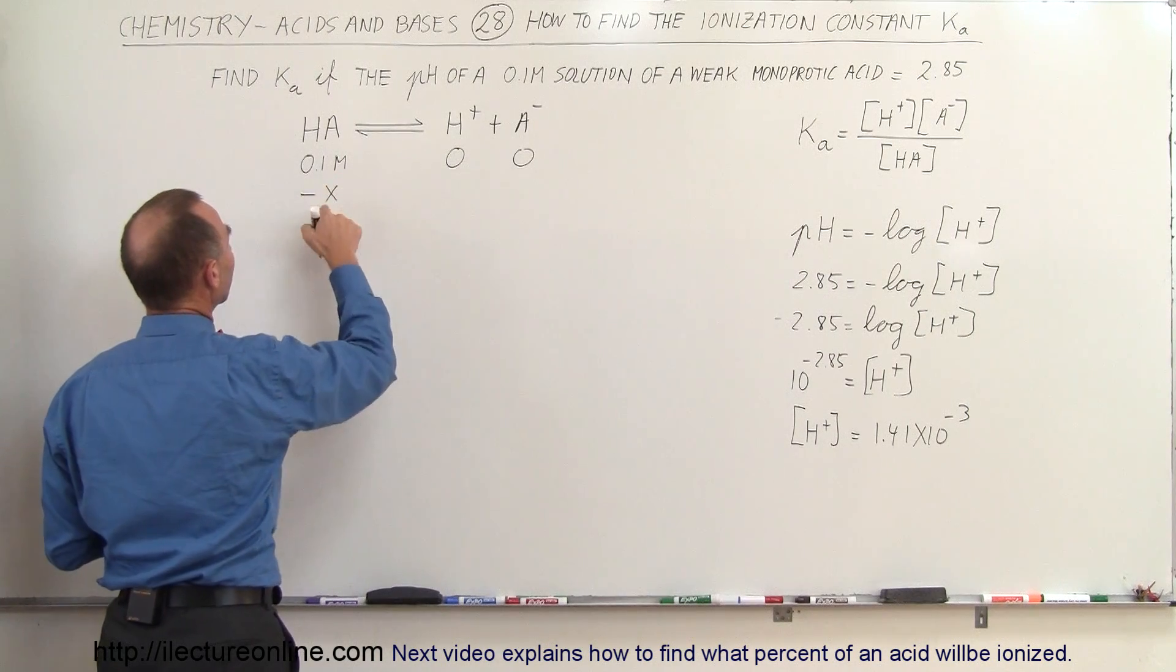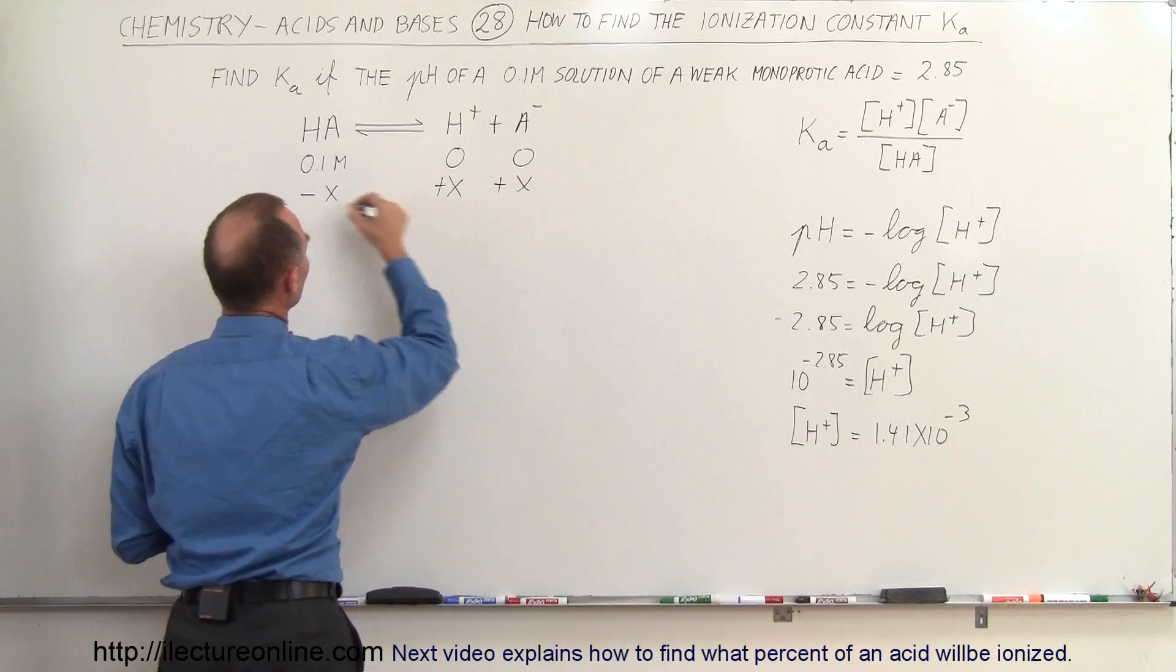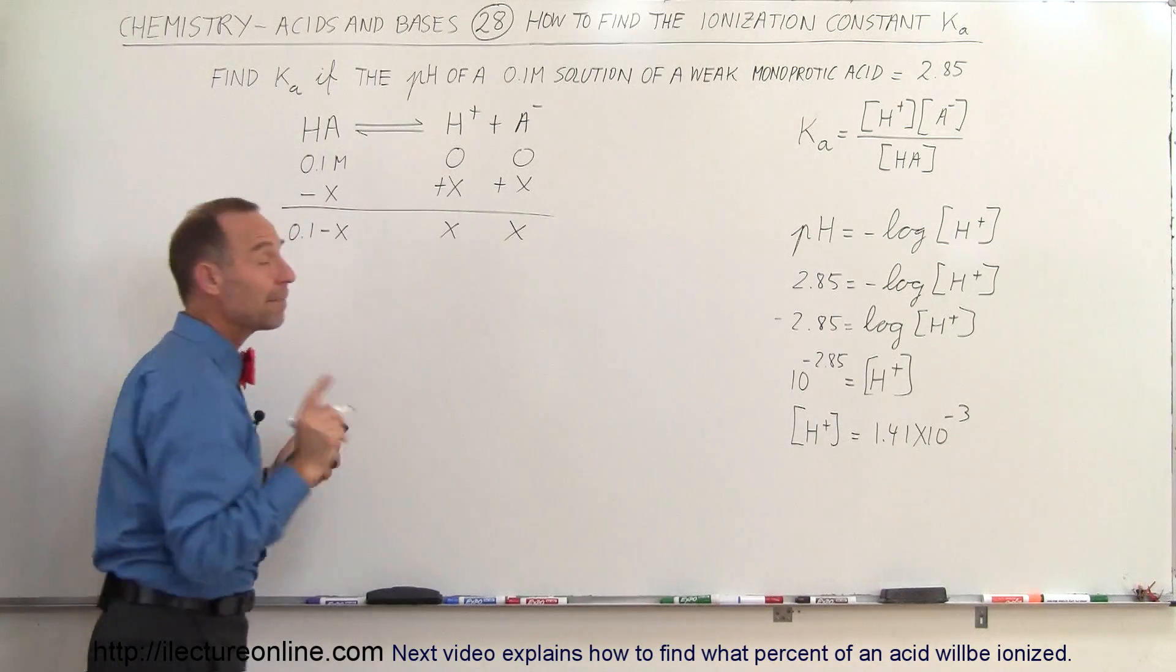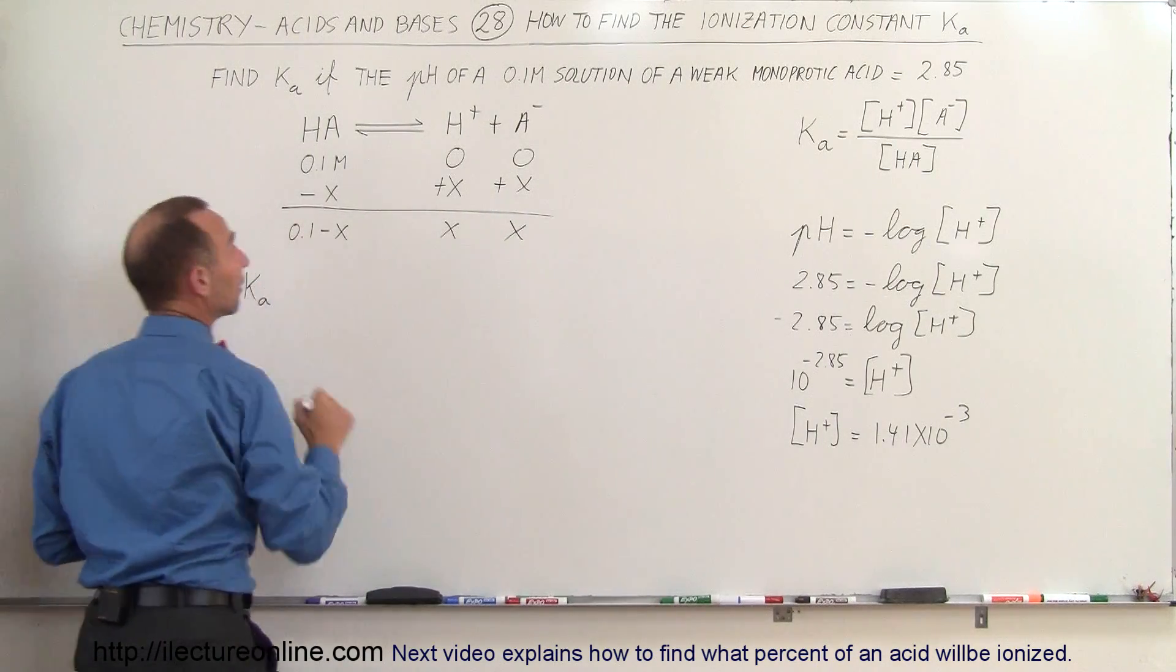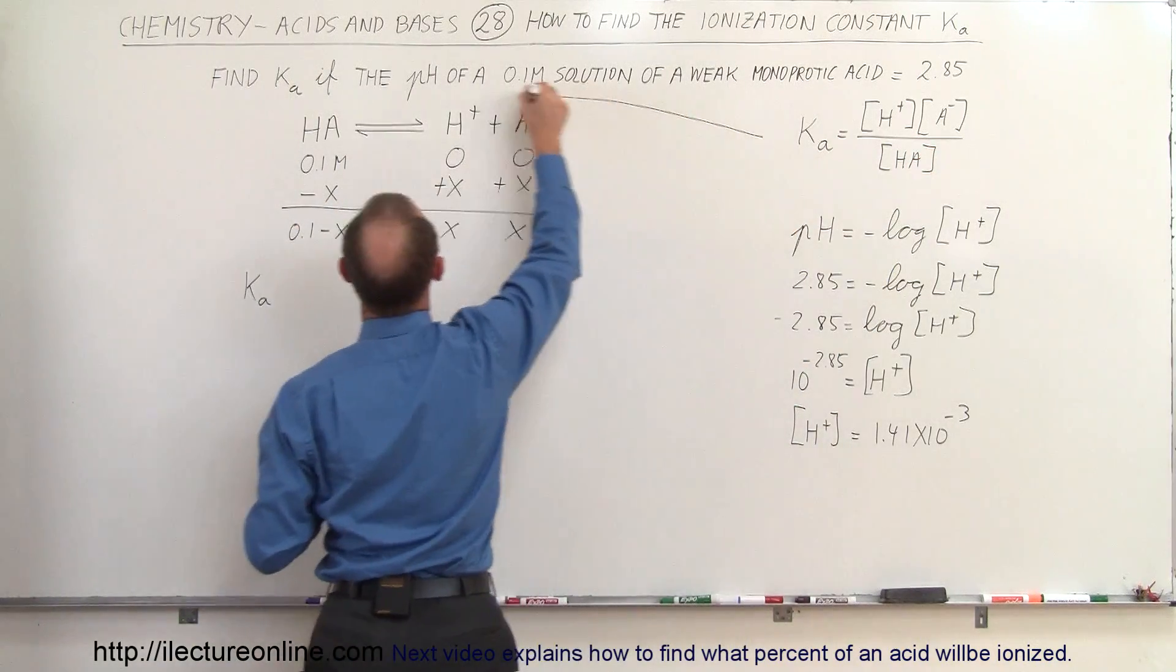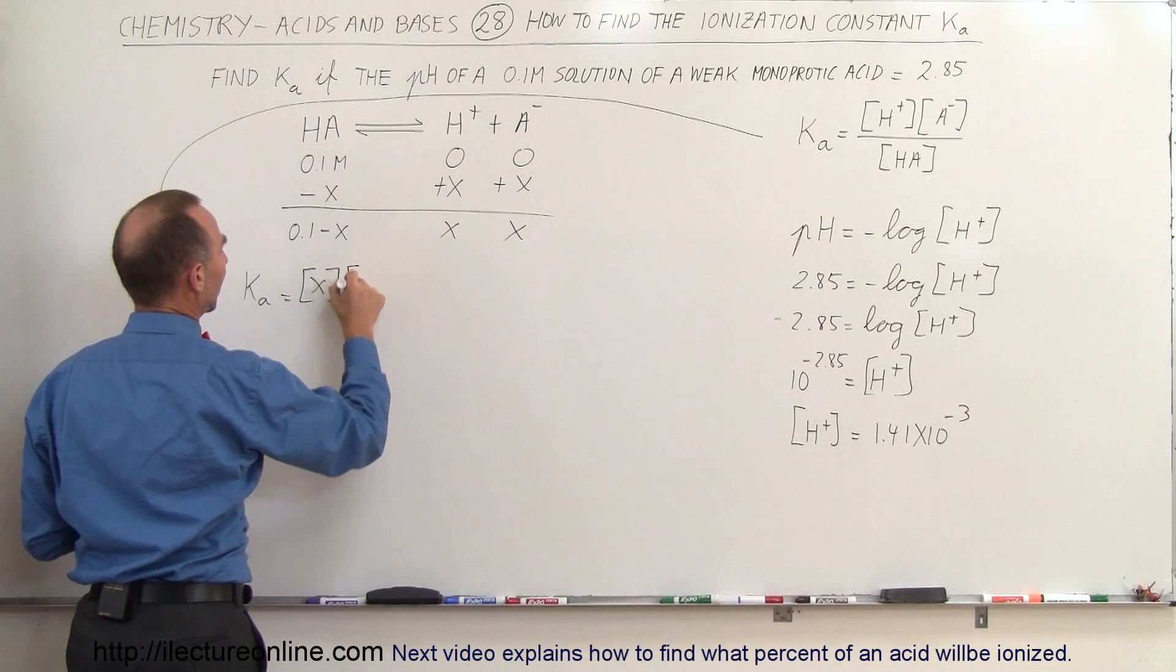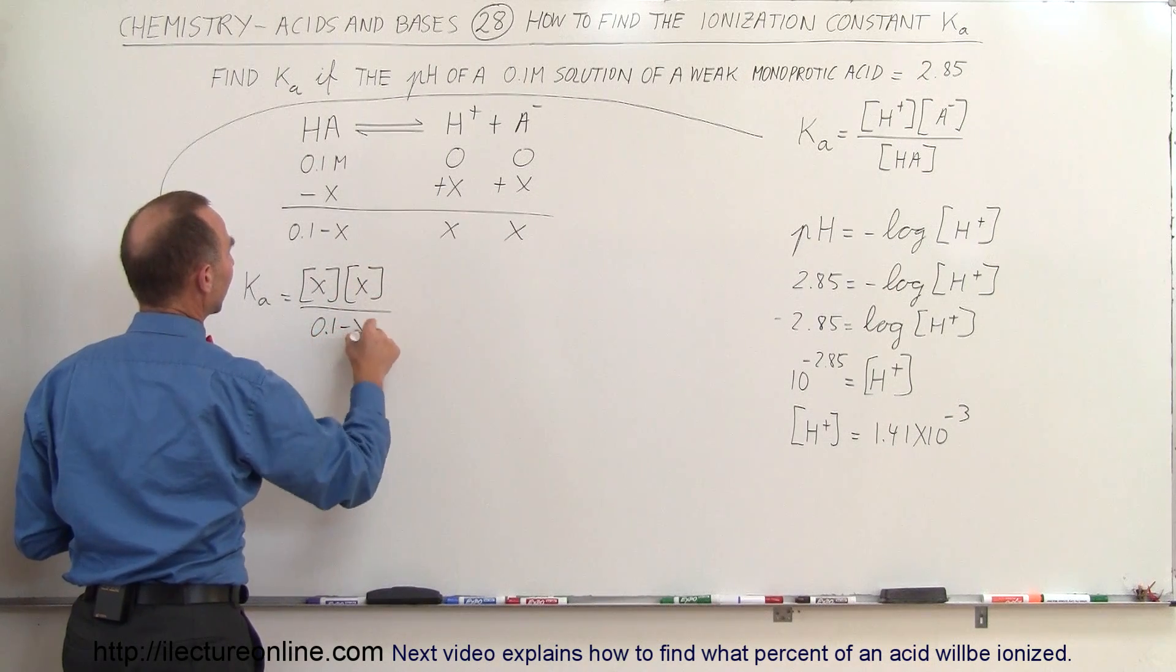So it reduces by the amount of x, and that means that these increase by the amount of x, so that the final solution is 0.1 minus x, x and x. So that means that, by definition, the ionization constant, using this equation right here, bringing this over here, so let me draw an arrow. So coming over here,